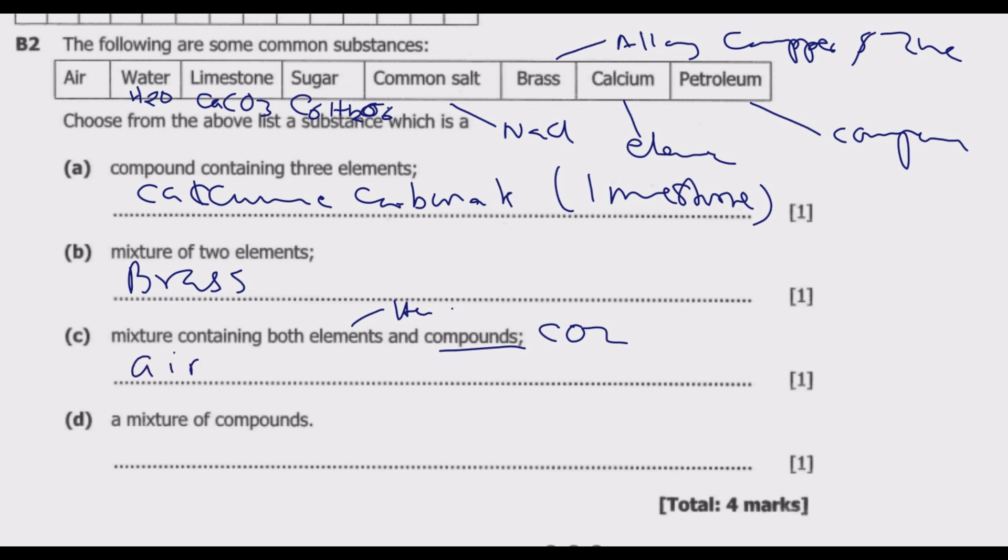Then D, a mixture of compounds. If you look at a mixture of compounds in this case, this would be basically petroleum. Petroleum is basically a complex mixture of hydrocarbons that occur naturally on earth in liquid, gas, and solid state. So this is basically petroleum as the answer.